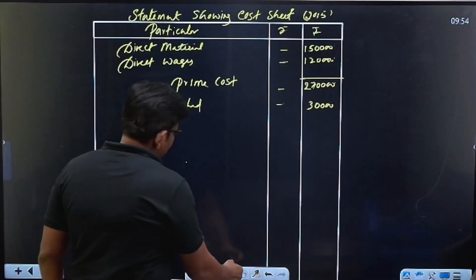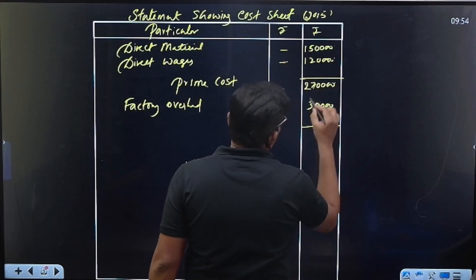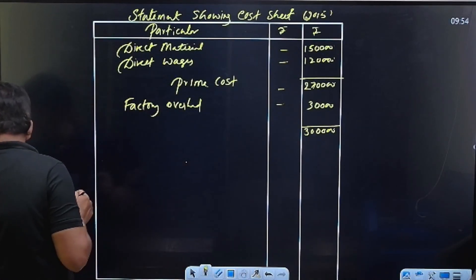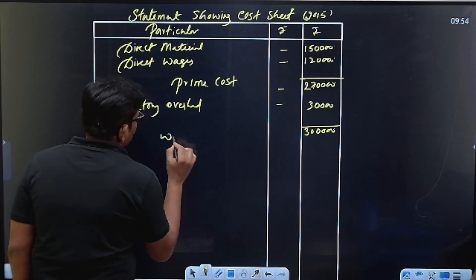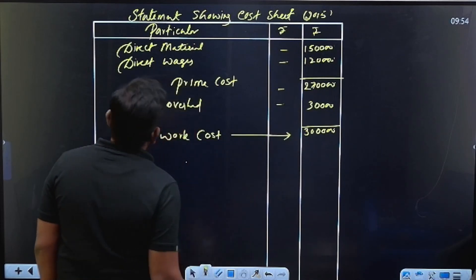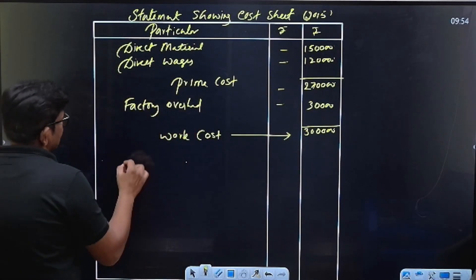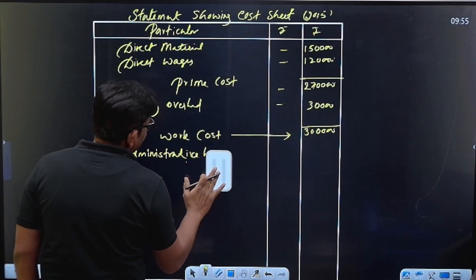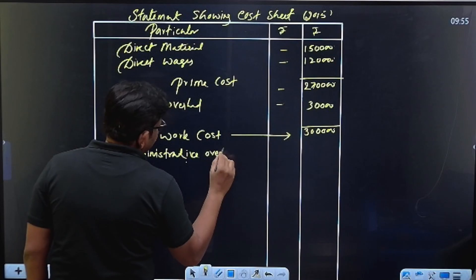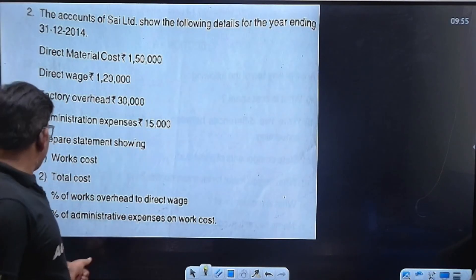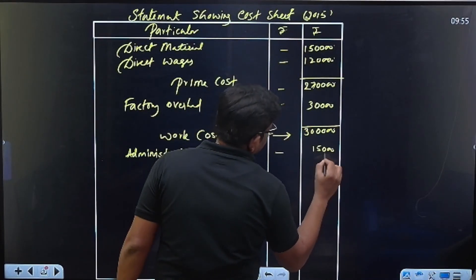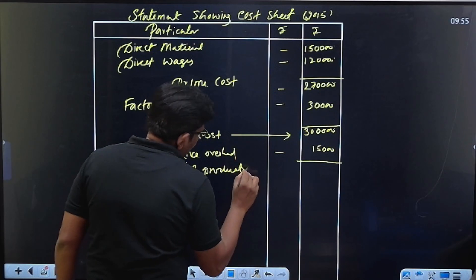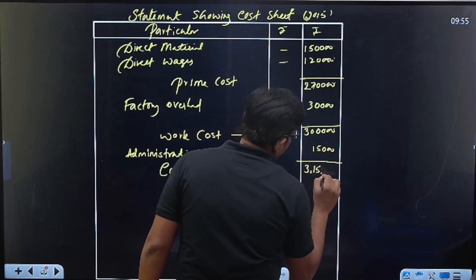Administrative expenses. Work cost. Administrative overhead — what is administrative overhead? 15 thousand. Administrative overhead done. Cost of production: 3 lakh 15 thousand.